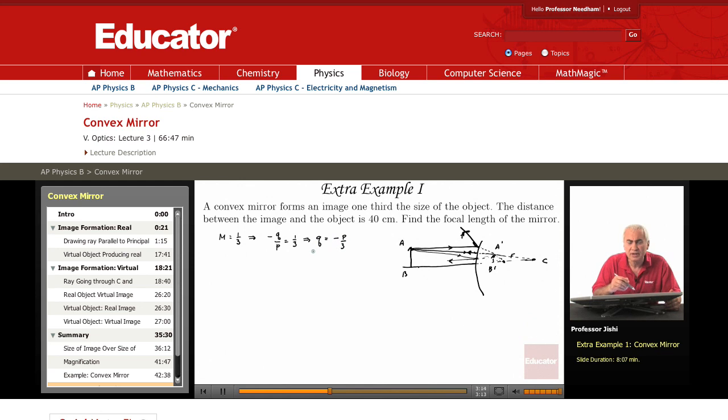Now, what's the meaning of this minus sign here? P is a positive number, so this means that Q is a negative number. Which means what? It means that the image is virtual.